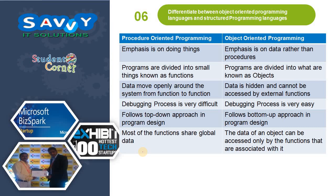Differentiating between Object Oriented Programming and Structured Oriented Programming: Structured Oriented Programming is also called Procedure Oriented Programming. SOP emphasizes doing things, while OOP emphasizes data rather than procedures. Programs are divided into functions in SOP, and into objects in OOP. Data moves openly around the system in SOP, while in OOP external functions cannot access an object's data. Debugging is very difficult in SOP but very easy in OOP. SOP follows a top-down approach; OOP follows a bottom-up approach. In SOP most functions share global data, while in OOP the data of an object can be accessed only by the functions associated with it.